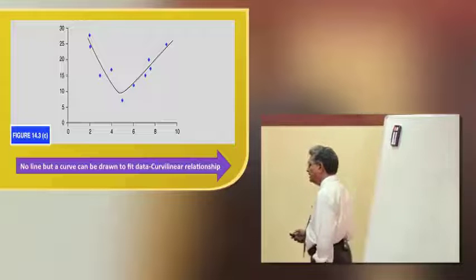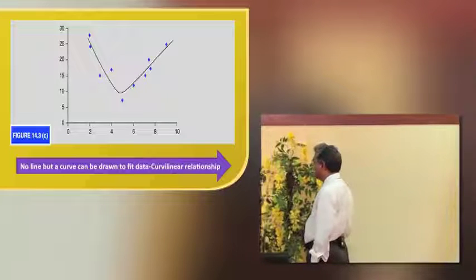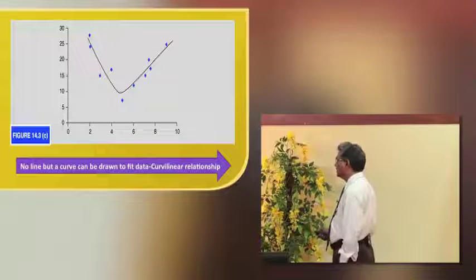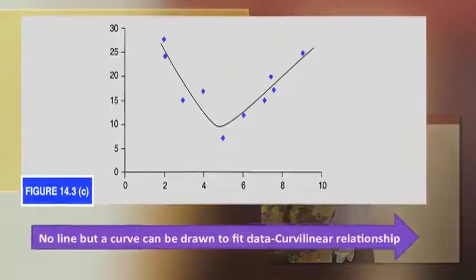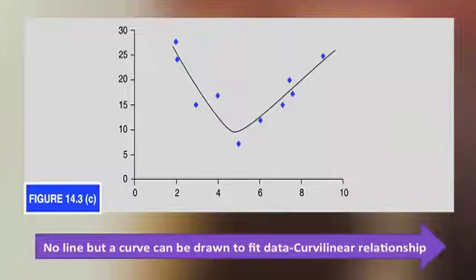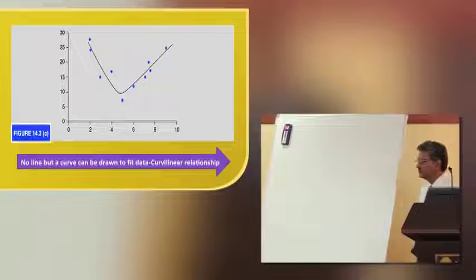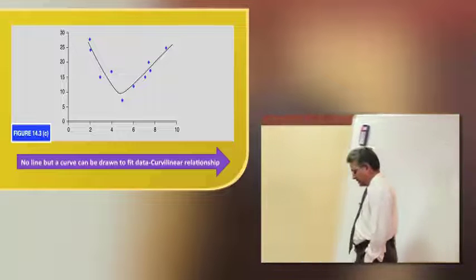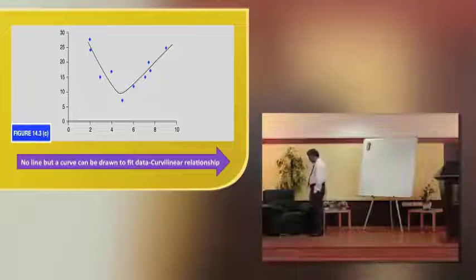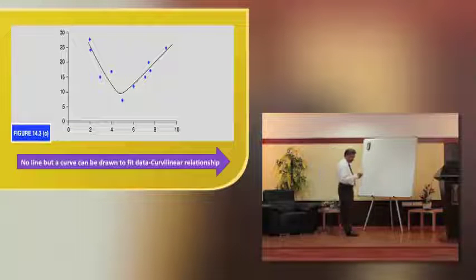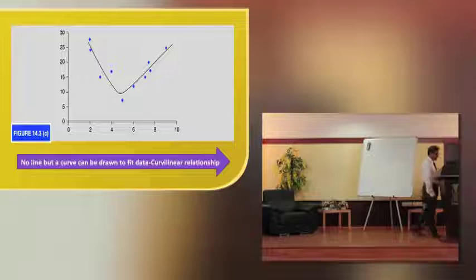As we have seen, the observations just cannot always form a line. When you try to connect them, it will be something like a curve — a parabola or some other shape — but a line cannot be drawn. This relationship is called a curvilinear relationship. The other one, where observations fit into a line, is a linear relationship. Curvilinear relationships are not within the scope of our study.